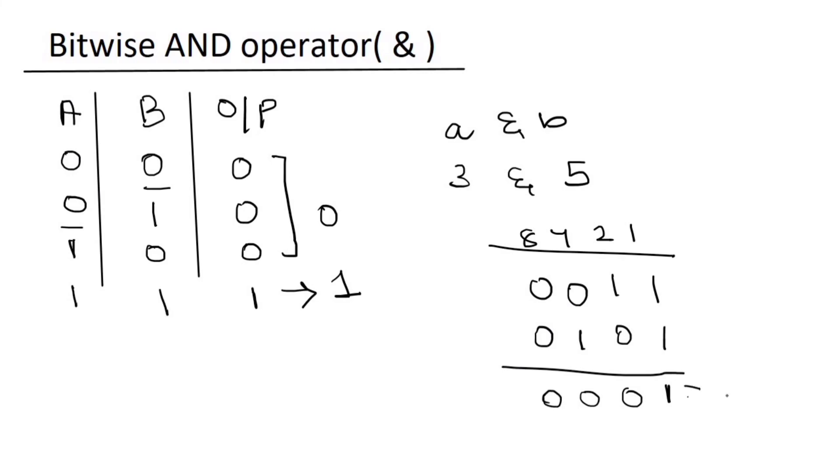So its decimal equivalent is equal to 1. So 3 and 5 is 1. Hope it is clear.